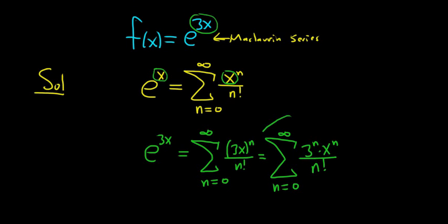So really simple. Again, to find the Maclaurin series for e to the 3x, you start by writing down the Maclaurin series for e to the x, and then just replace x with 3x. I hope that made some sense. That's it.